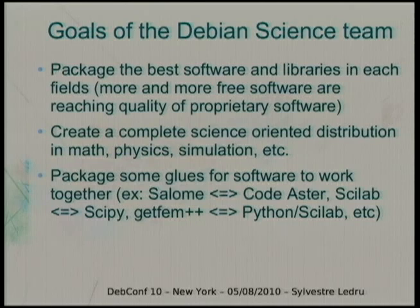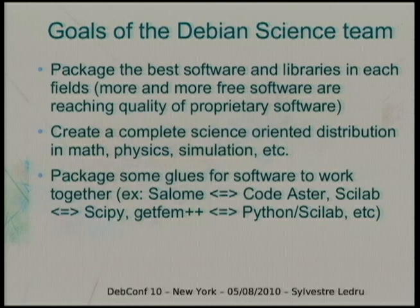We're trying to reach the same level of quality as proprietary software. In science software, free alternatives were usually a bit less good, partly because proprietary software is very expensive — for example, a MATLAB license with the Simulink extension is about 18,000 euros per license per computer. Corporations and states are happy to finance free alternatives. We're starting to get more and more very high-quality software usable by a general user, not just an IT professional. We're packaging things in various sectors: math, physics, simulation, modelization, and so on.